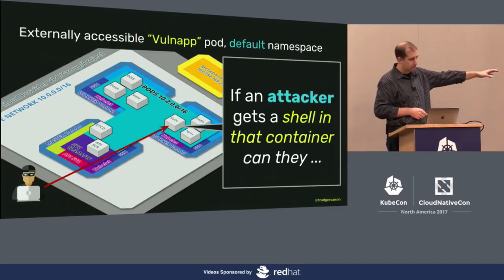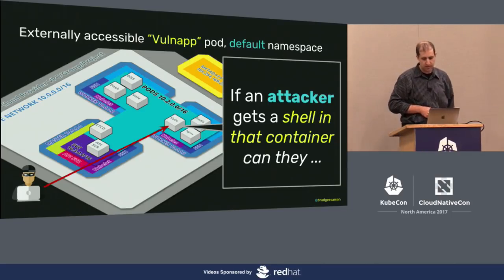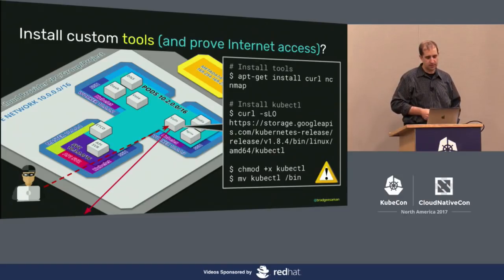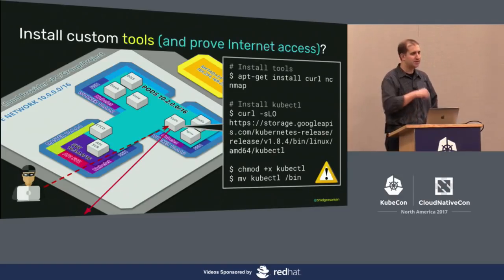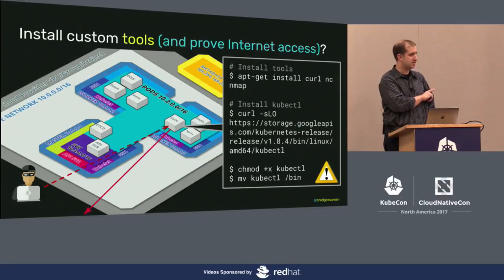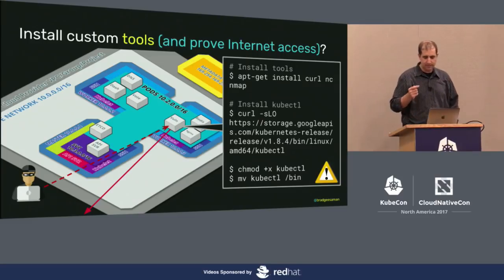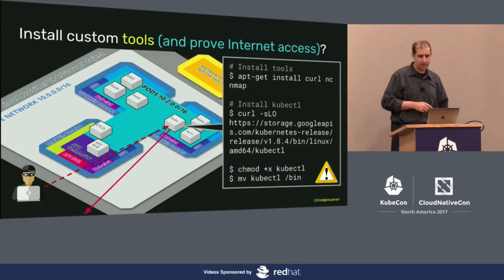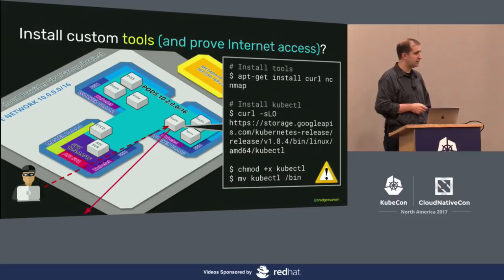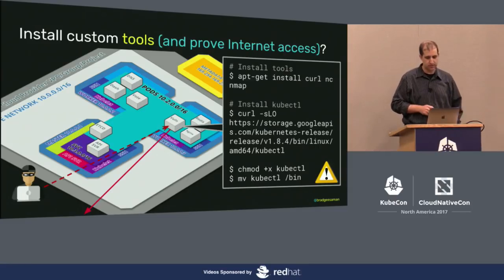If the attacker is able to exploit the vulnerable app in the default namespace and gets a shell, can they install custom tools and prove internet access — which penetration testers always love? Can I install curl, netcat? Can I pull down the kubectl binary and run it? That's always interesting. It's not common anymore, but in 1.4 and 1.5 some installers still had the insecure bind address on the API server — no authentication or authorization, a direct pass to cluster admin. That's a big no-no.